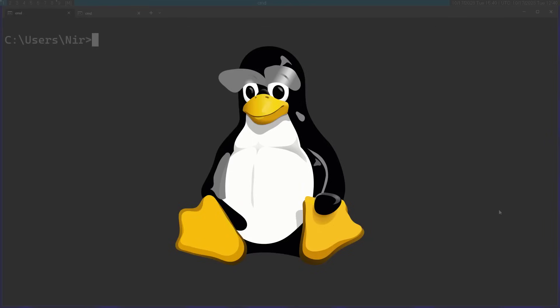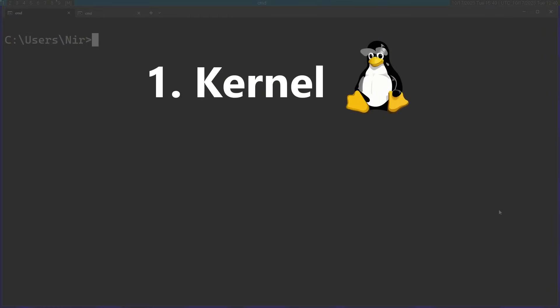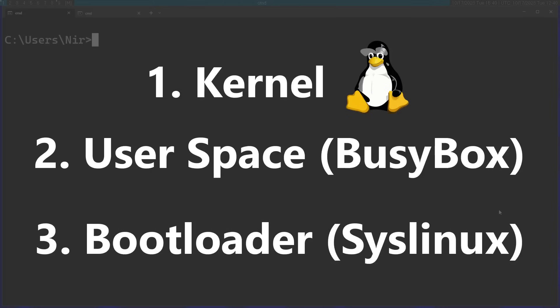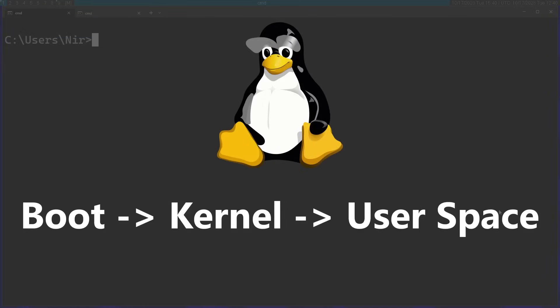To build a simple distro we're going to need three parts. First, we're going to need the kernel, and we're going to compile that right now. We're going to need some kind of user space — for this we're going to use something called Busybox, which essentially supplies us with all the basic Unix tools. Finally, we're going to need a bootloader, which is going to load the kernel, and the kernel is going to load Busybox, supplying us with all the tools we need in user mode.